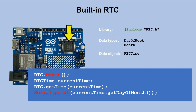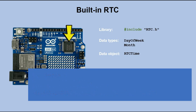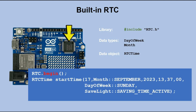The RTC time object isn't just for reading and displaying time. Here we'll use it to set up the time in the RTC module. Once again, you initialize the RTC module, then you declare the RTC object. But this time you provide specific information that you want to set in it — the exact date and time you want to configure the RTC to use. And finally, we use the setTime method to send the data from the RTC object to the RTC module.